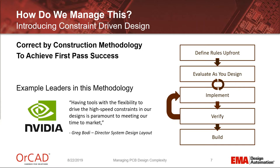As you evaluate the design and go through it, you're getting real-time feedback from the design system — as you move something, slide things around. These are the kinds of things you really need to achieve first-pass success. You go through a process where you implement, verify, and the entire time you see a theme: real-time feedback, heads-up displays with push and shove during routing, tuning during routing, and real-time impedance feedback. Those are really necessary for first-pass design success.